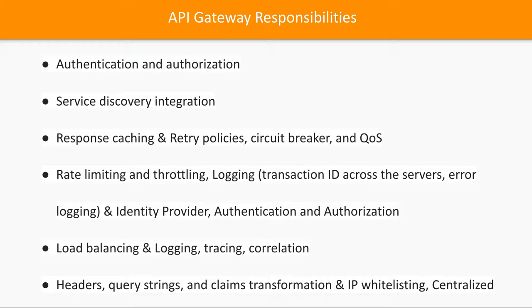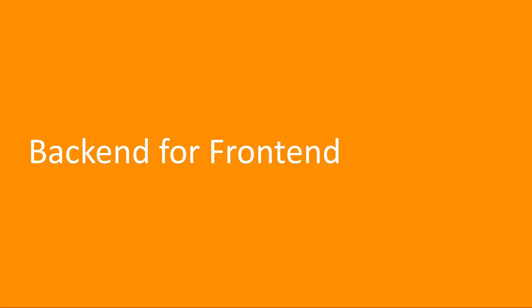API Gateway also helps enable identity provider authentication and authorization — this is true for AWS API Gateway specifically. It provides load balancing, logging, tracing, and correlations. With API Gateway you can also do IP whitelisting and handle headers and query strings coming from clients. These are the basic things we get from the API Gateway.